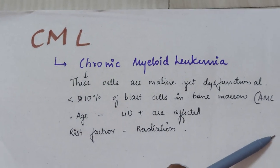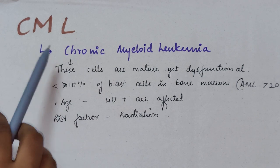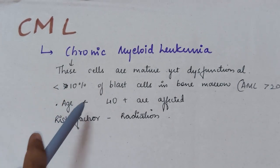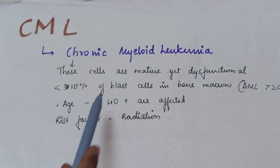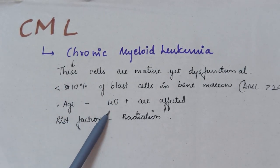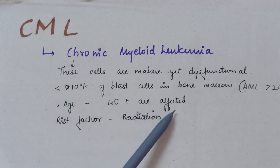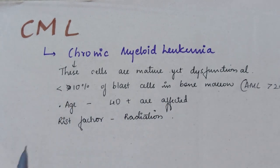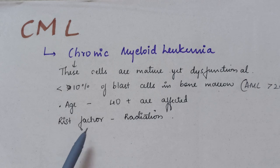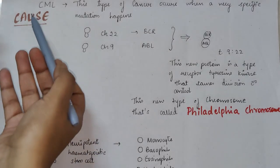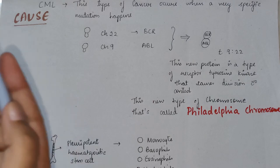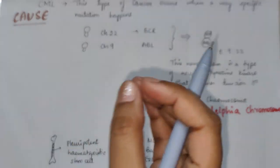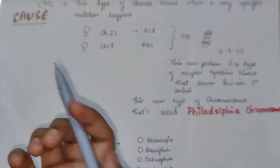CML mostly affects people of elder age — 40 years plus are usually affected. The risk factor for developing chronic myeloid leukemia is radiation.